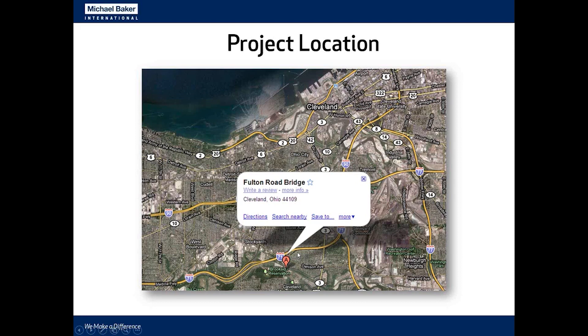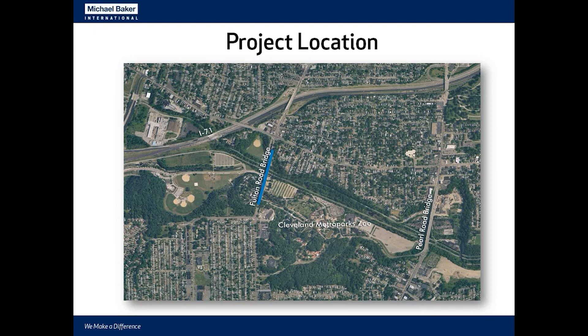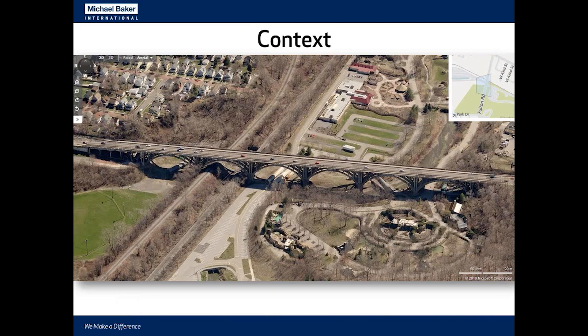The bridge is just south of downtown, in a pretty culturally significant area of town. Zooming in a little more on the project location, the bridge crosses a valley in which the Cleveland Metropark Zoo is located. It also crosses over two sets of active railroad tracks — one CSX and one Norfolk Southern.